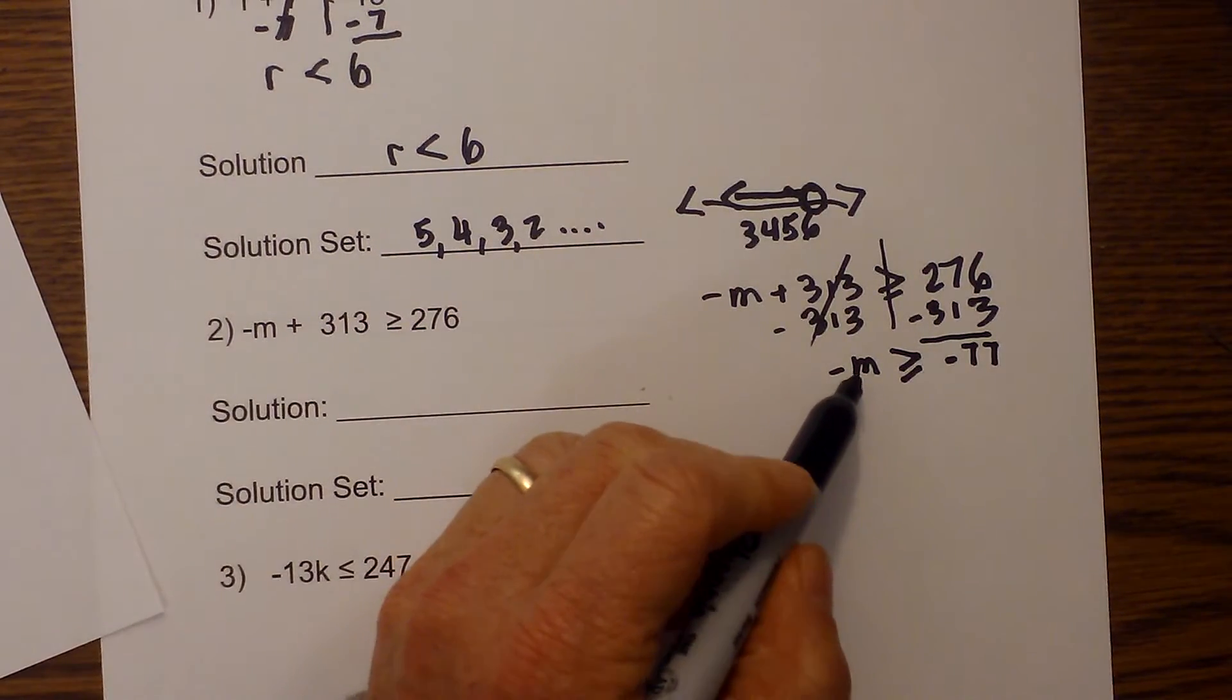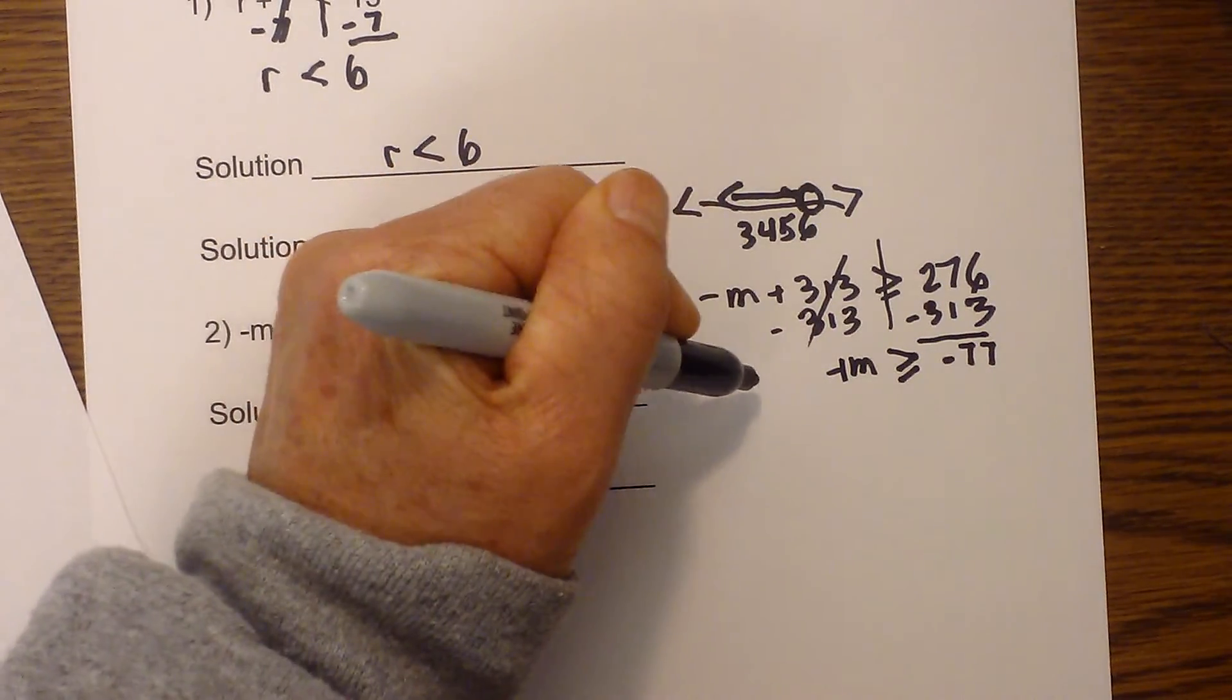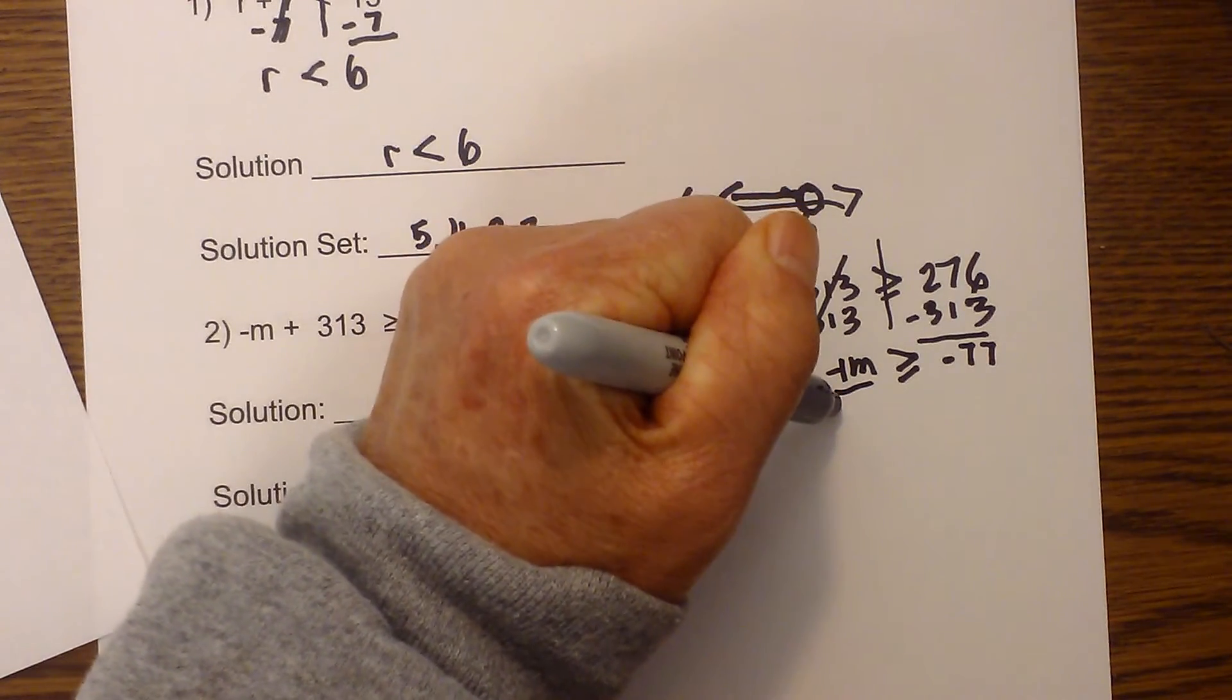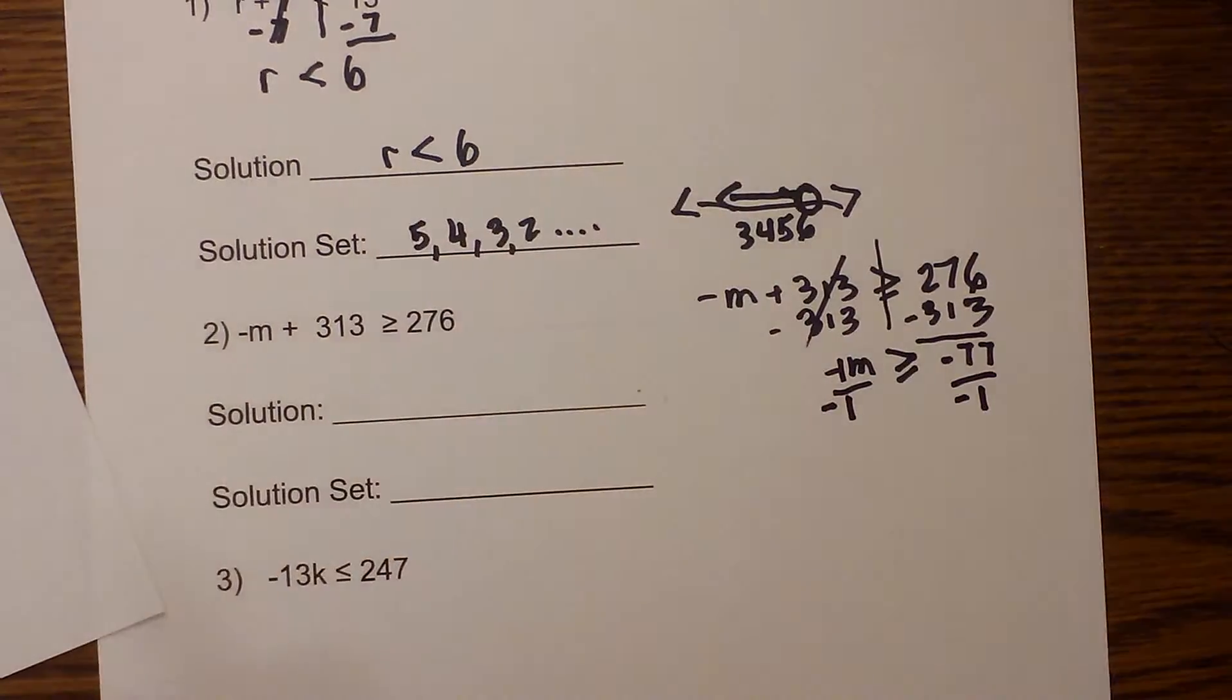And so now I have negative m is greater than or equal to negative 77. Now, what am I going to do with this negative sign? Well, you can think of having a 1 in front of the m. So the inverse operation of multiplication is division. So I will divide by negative 1. I will divide negative 77 by negative 1.